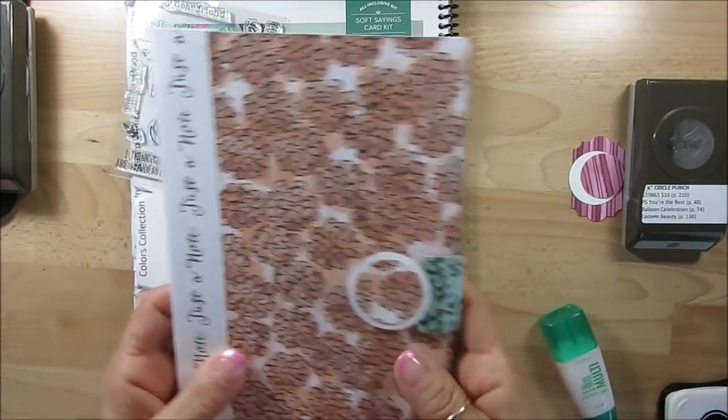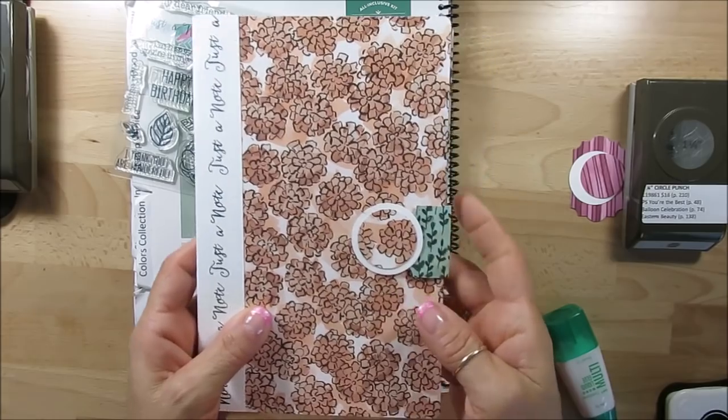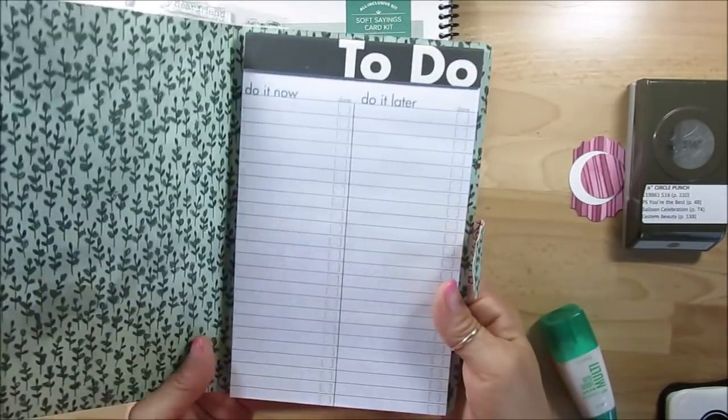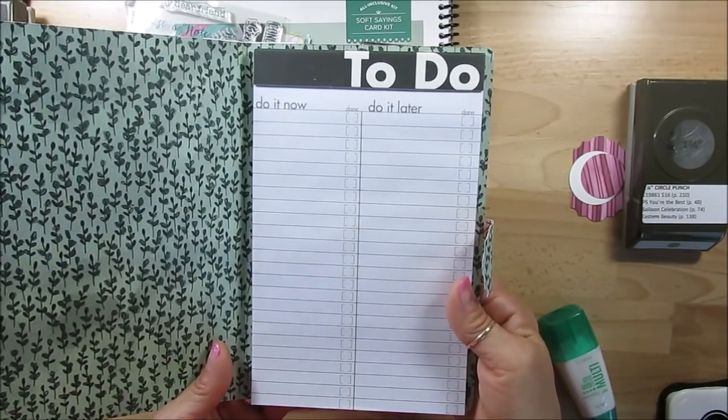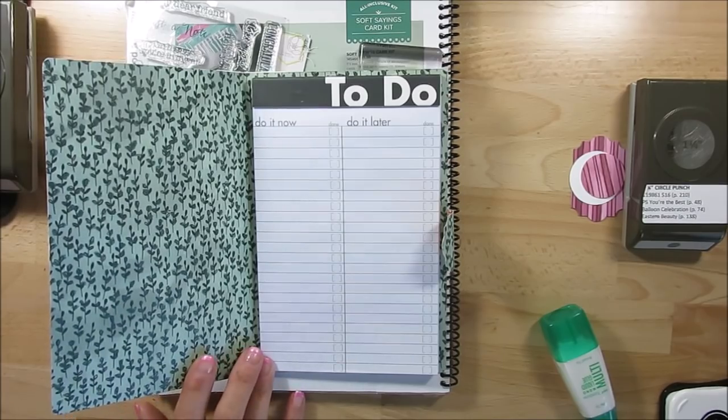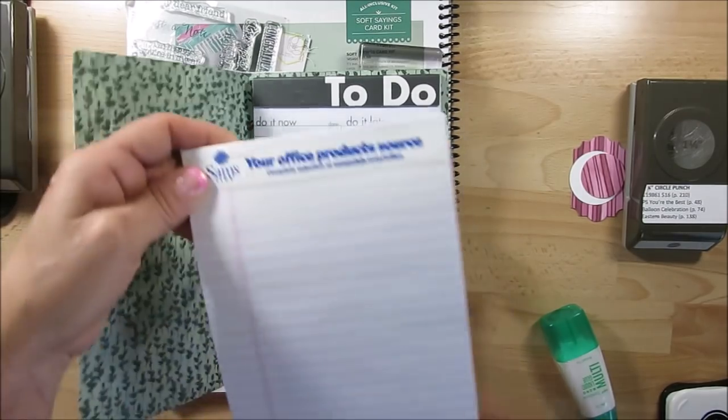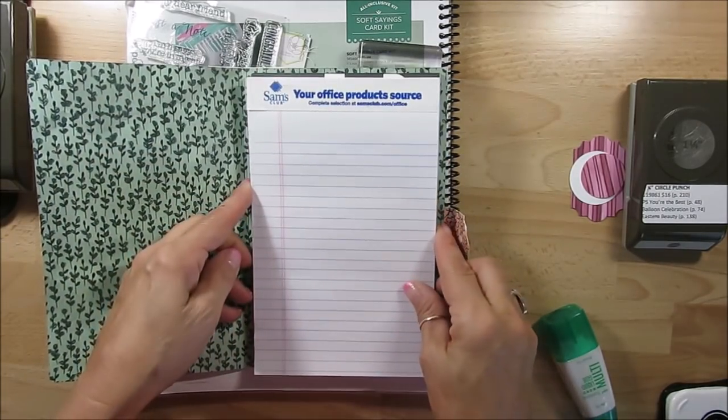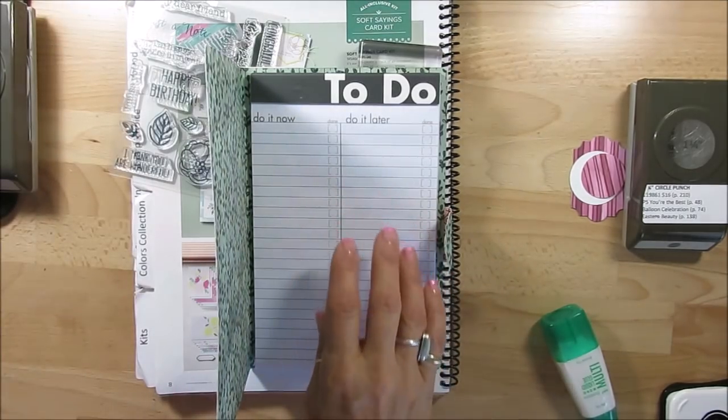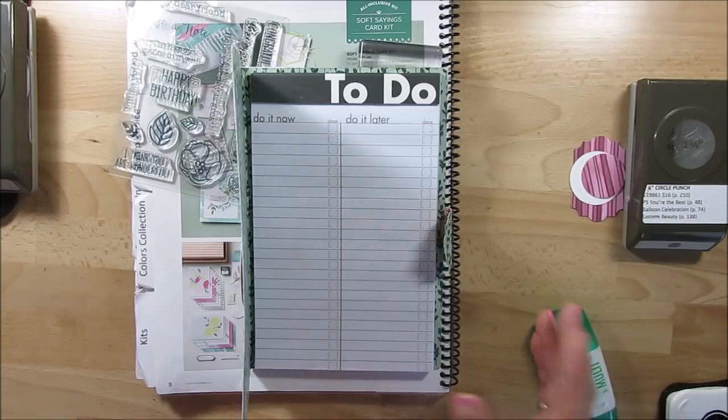Today I'm going to share with you how to make this cute little notebook. This one is a to-do list - do it now or do it later. Or you can also use just a plain notepad. You can buy them - see, it's the same size. So if you don't like the to-do, then you can use a plain one.